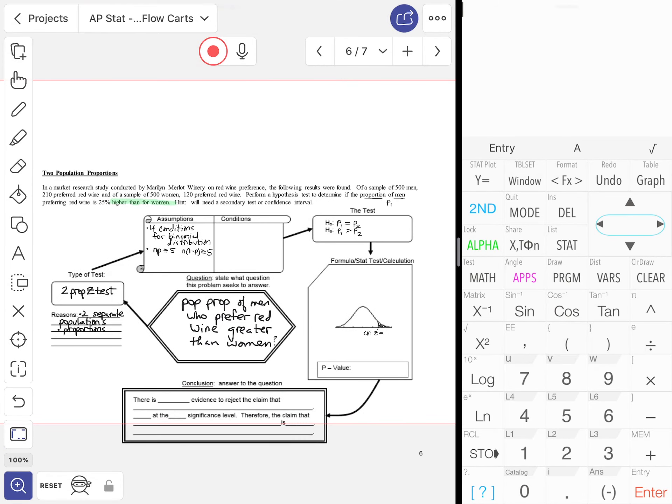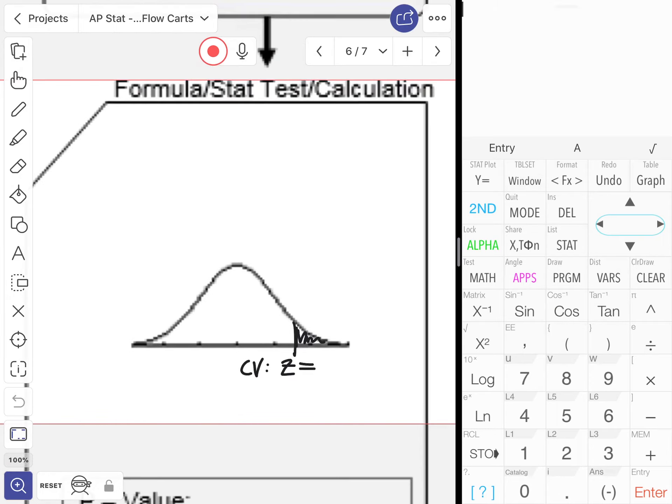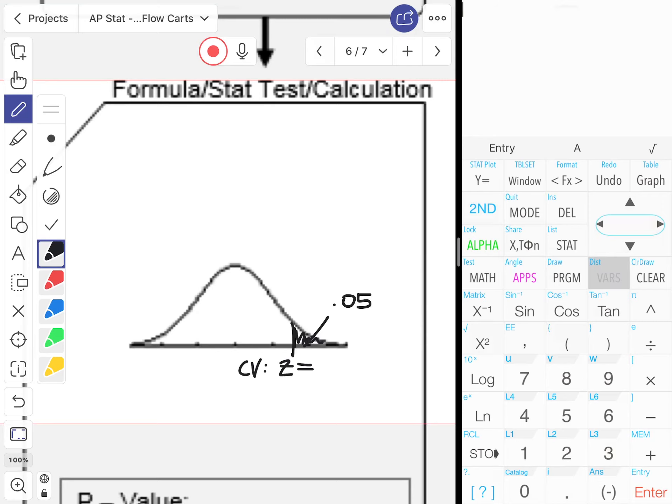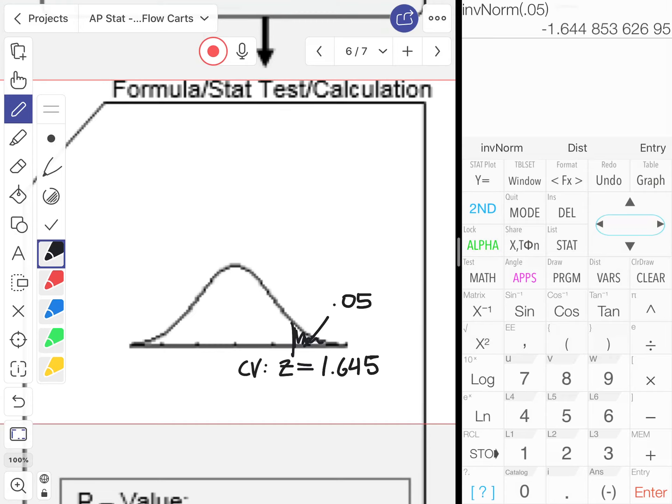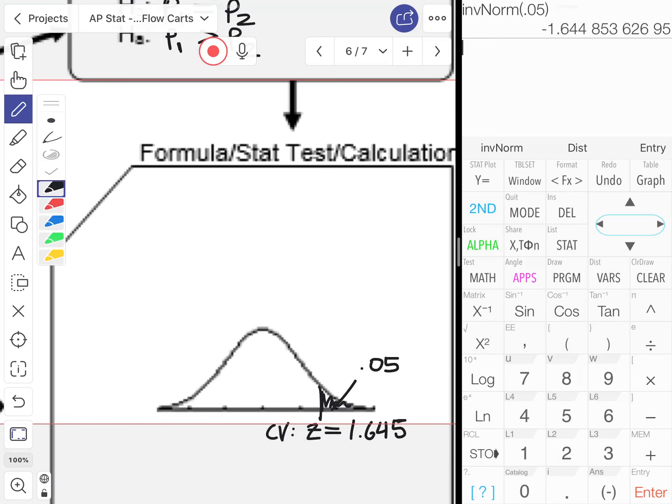Critical value: they didn't give us an alpha, so we're going with 0.05. Second vars, we're looking for inverse norm. I'll just do the 0.05 and negate it, so 1.645. My test statistic z equals (p̂₁ - p̂₂) - (p₁ - p₂) all over the square root...